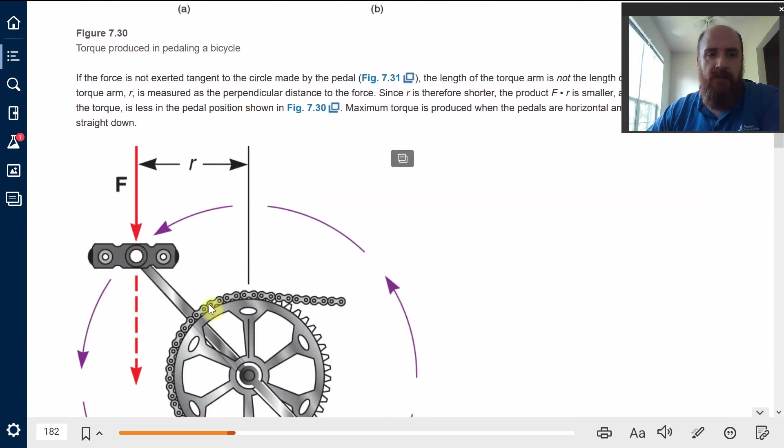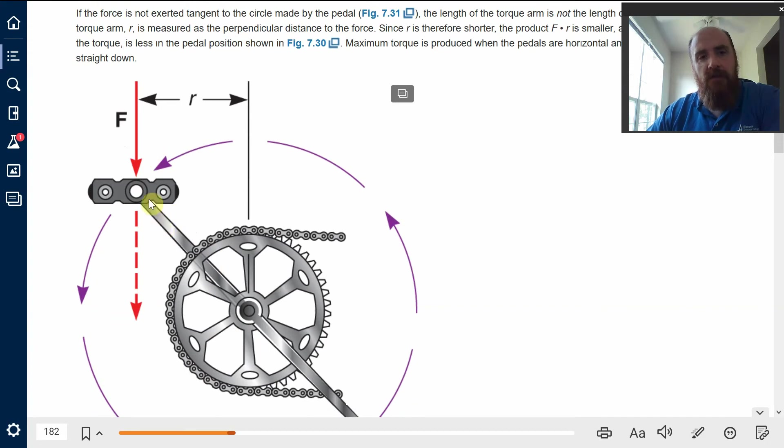In most of the situations that we're looking at, force is going to be perpendicular to the R that is given. If you have a diagram like this, you realize that the radius, the R that we're going to use is not the length of the pedal arm, it's the length of this R, which is the perpendicular distance. So just keep that in mind.